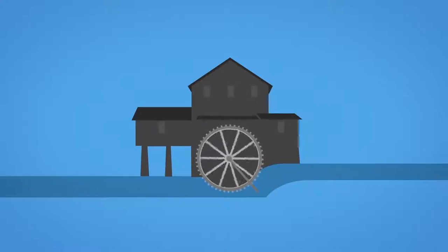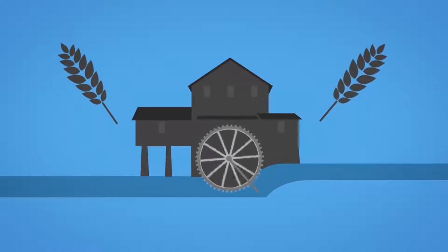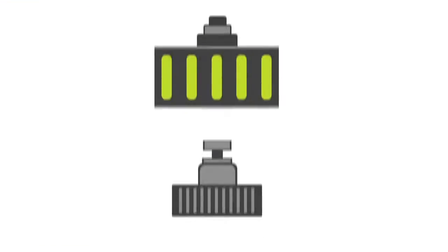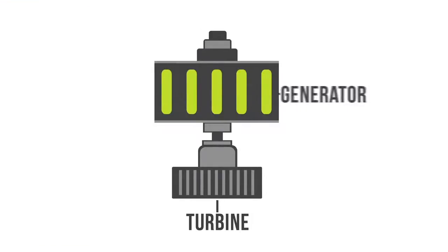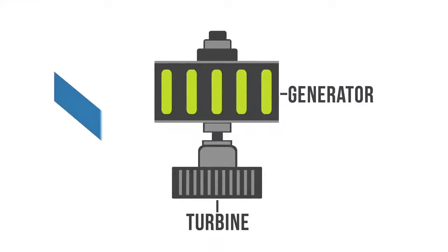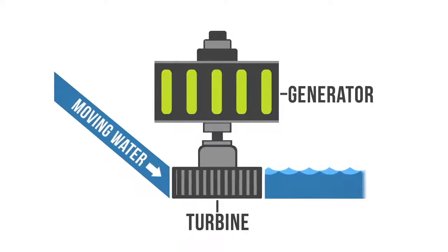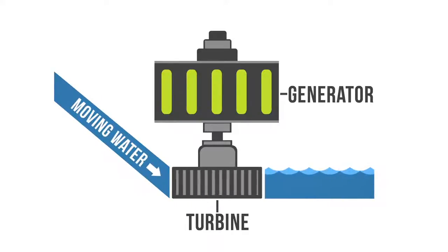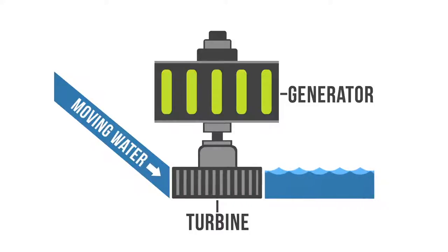One of the first uses of hydroenergy was for mechanical milling, such as grinding grains. But today, modern hydro plants produce electricity using turbines and generators. The mechanical energy created by moving water spins rotors on a turbine, which is connected to an electromagnetic generator that produces electricity when the turbine spins.